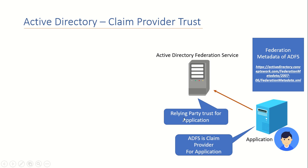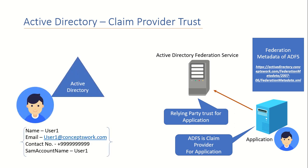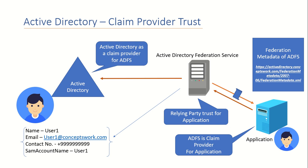Your application is contacting ADFS because ADFS is the claim provider for your application, and on your ADFS you have a relying party trust for your application. But it's not ADFS that actually holds the user object — user objects are created in Active Directory. What ADFS has to do is query the attributes of a user object from AD. In order to do this there must be communication between ADFS and AD, and the claim provider trust created by default for AD is what allows ADFS to contact your Active Directory. Depending upon the relying party trust configuration, ADFS will query certain claims and send a token to your application — so Active Directory is acting as a claim provider for ADFS.